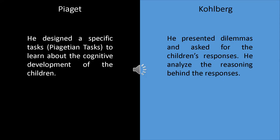Jean Piaget designed specific tasks — what we call Piagetian tasks — to learn about the cognitive development of children. Meanwhile, Kohlberg presented dilemmas and asked for the children's responses, then analyzed the reasoning behind those responses. That is the key difference between Piaget and Kohlberg.